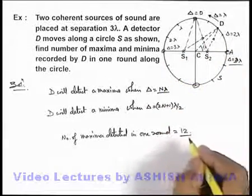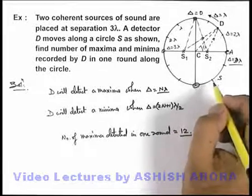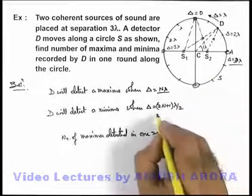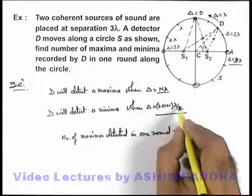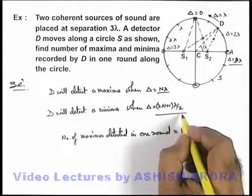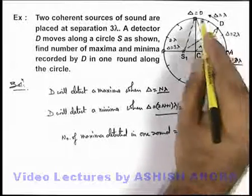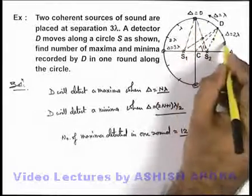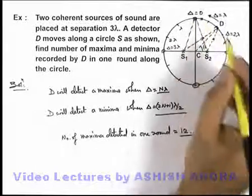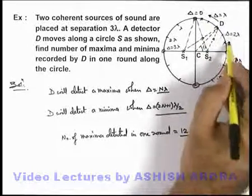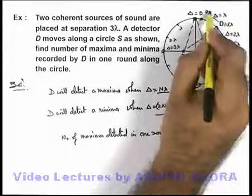If we talk about the locations of minima on the circle, the locations of minima are those points where path difference is an odd multiple of lambda by 2. So here the path differences go from 3 lambda, 2 lambda, lambda and zero, meaning there will be locations exactly midway between these points where path difference will be 2.5 lambda, 1.5 lambda, and 0.5 lambda.